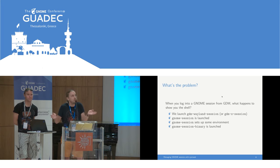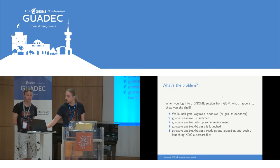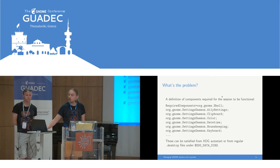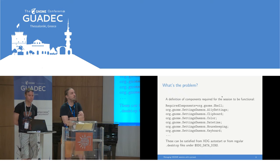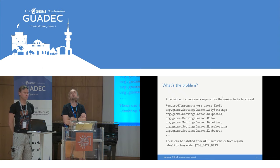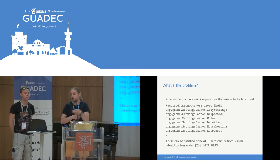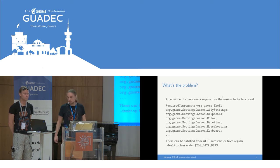At this point we still don't know anything about the session you're launching. But now we're going to read the session definition file, which is comprised of a few things. The main thing it contains is a list of required components — a definition of things you need to have running in order for GNOME to consider your session to be up. In this example, from a GNOME session, it's going to be the shell itself and a bunch of stuff from GNOME settings daemon, and possibly a few other things.